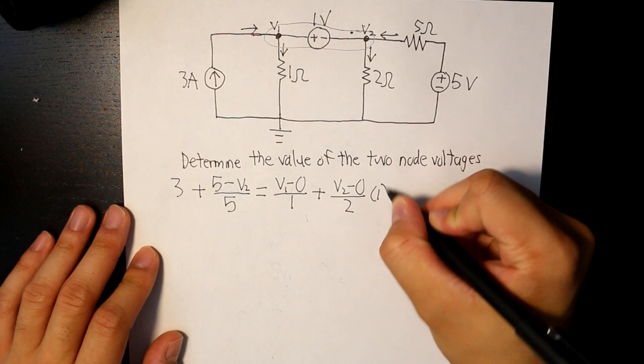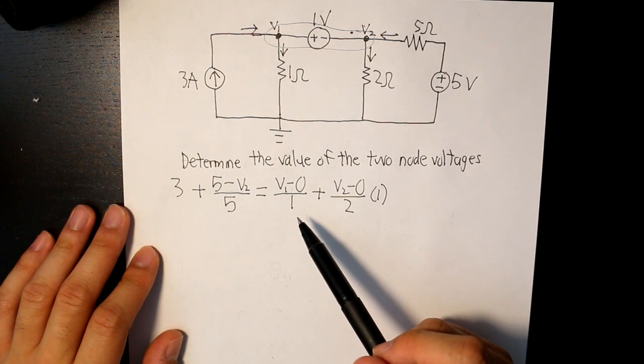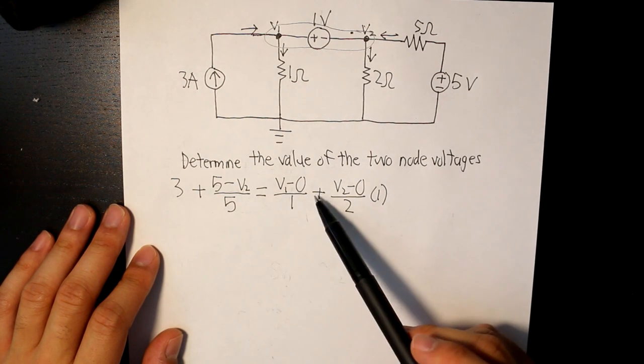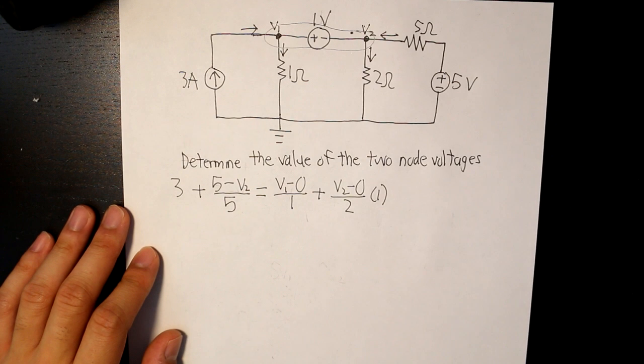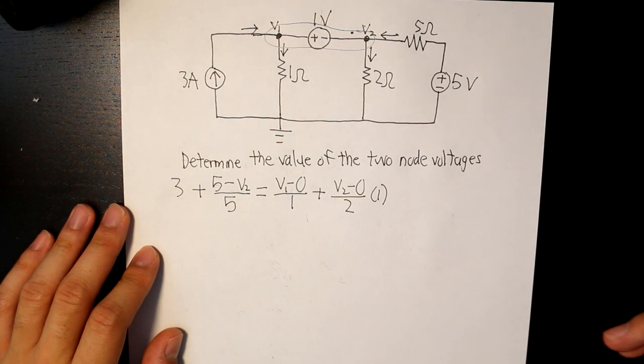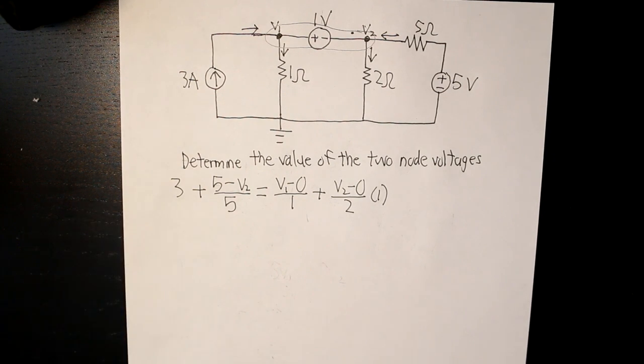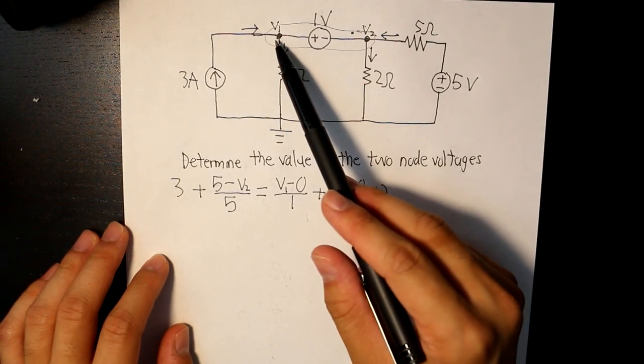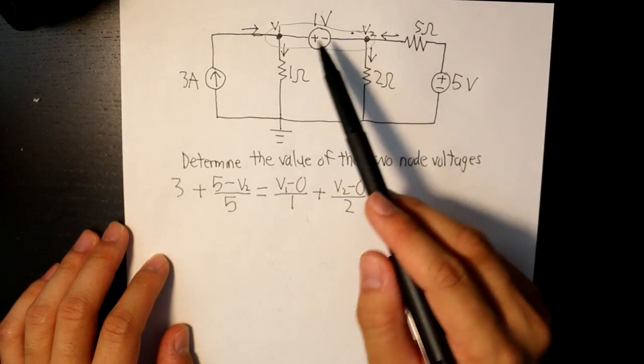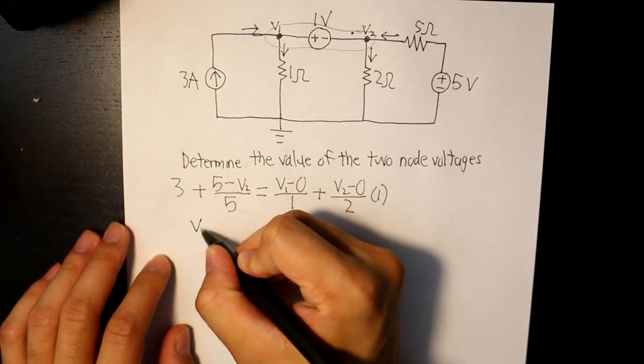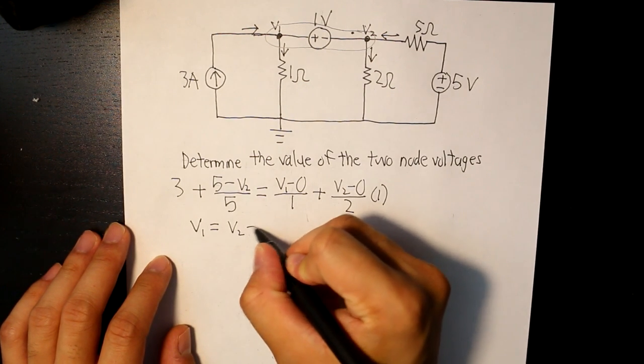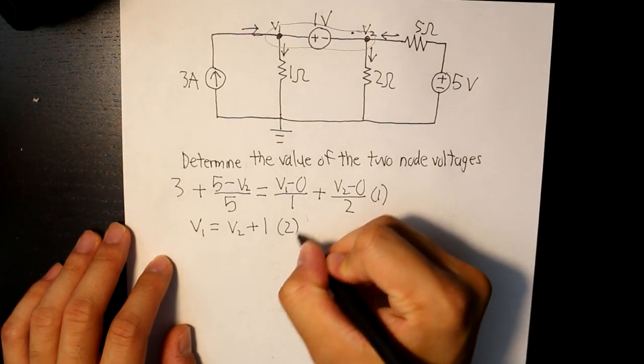So this is our first equation. And as I've told you guys before, we cannot solve what these two node voltages are because we're only given one equation. We have to create another equation, and that equation would be the supernode equation. And the supernode equation here in this example would be this diagram right here, and that would be V1 is equal to V2 plus 1. So this is our second equation.